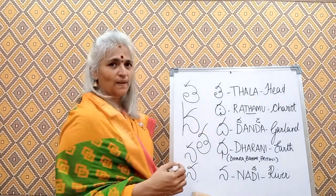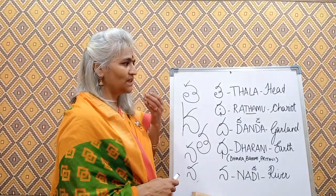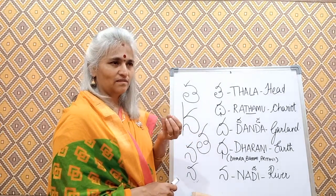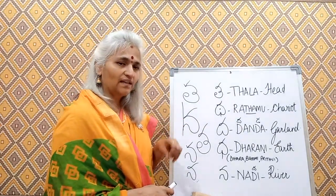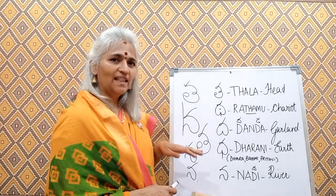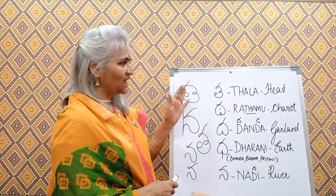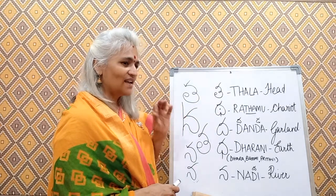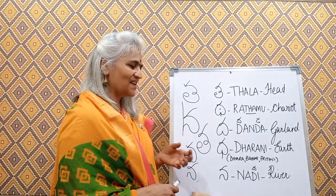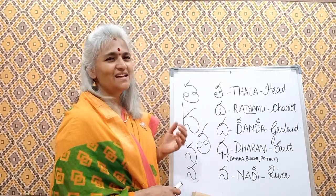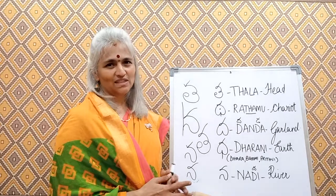So: ta — tala — head. Tha — maha pranam, with more pressure and more volume of air expelled — rathamu — chariot. Da — danda — garland. Dha — dharani — earth. Na — nadi — river. That's all for now. See you in the next video with some more consonants. Namaste.